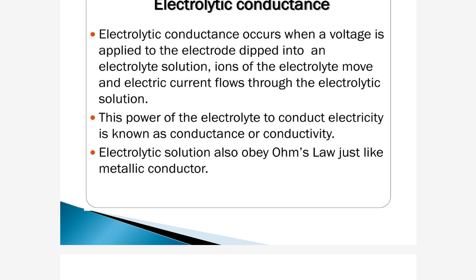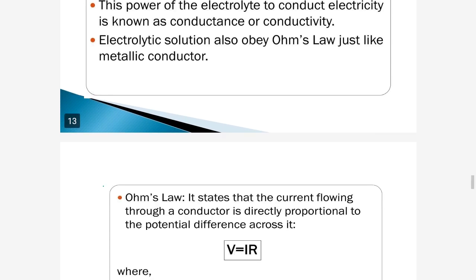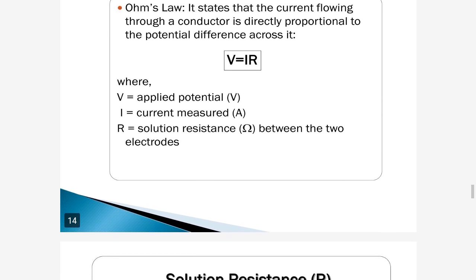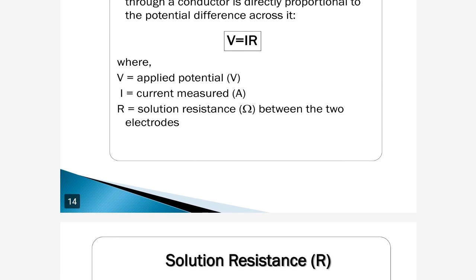Electrolyte solutions also obey Ohm's law, just like metallic conductors. Ohm's law states that the current flowing through a conductor is directly proportional to the potential difference. That is: V equals IR, where V is the applied potential, I is the current measured in amperes, and the potential unit is volt. R is the resistance of the solution, measured in ohms, between the two electrodes.